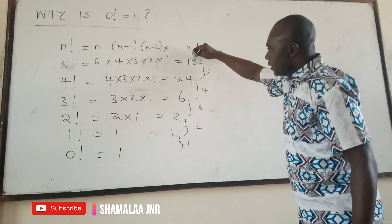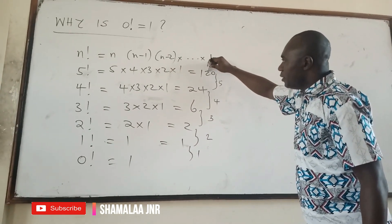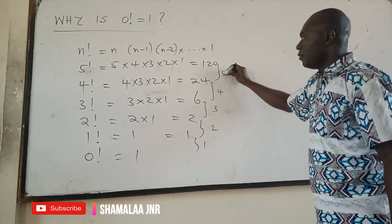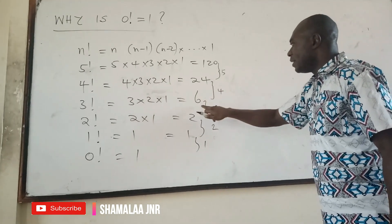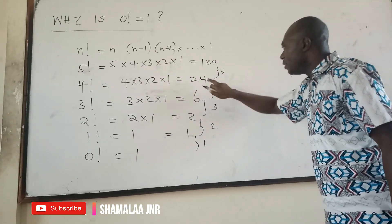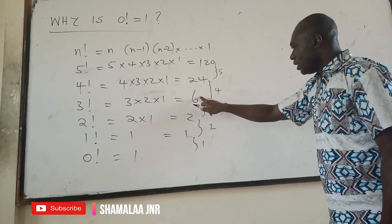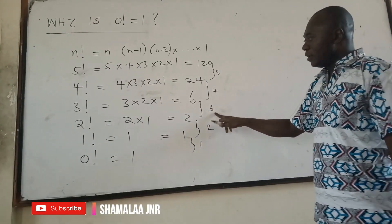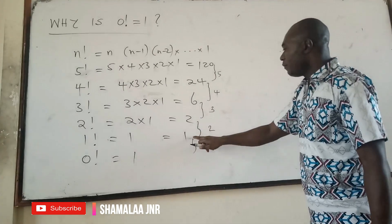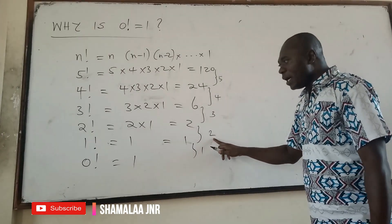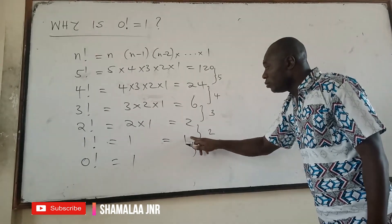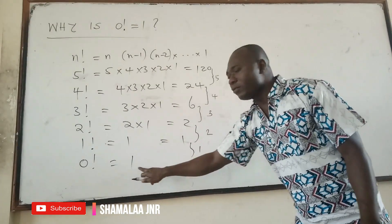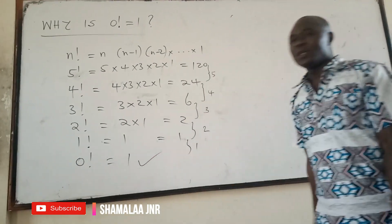Again: 120 is 5 factorial. To get from 120 to 24, you divide 120 by 5. To get from 4 factorial which is 24 to 3 factorial which is 6, divide by 4. At 3 factorial which is 6, to get 2 factorial, divide by 3. When you are at 2 factorial which is 2, to get to 1 factorial, divide by 2. And when you are at 1 factorial which is 1 and want to get to 0 factorial, you divide 1 by 1, and you get 1. So this is why 0 factorial is equal to 1.